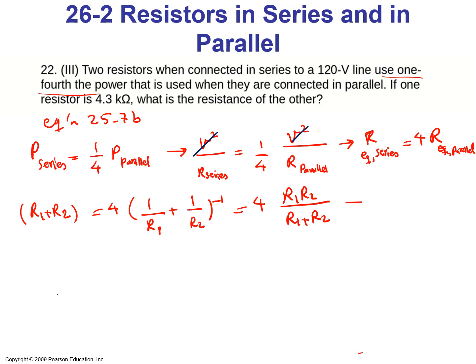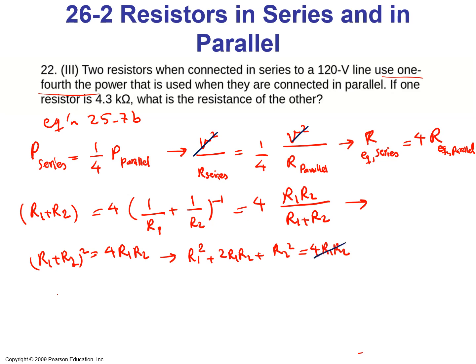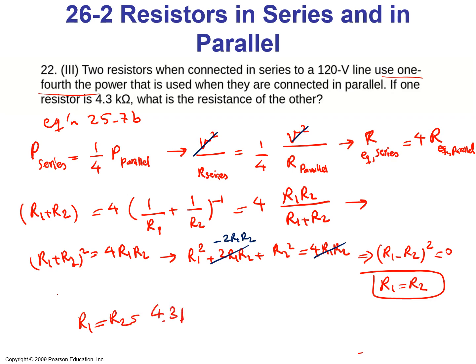Doing the algebra: R1 plus R2 squared equals 4 R1 R2. Expanding: R1 squared plus 2 R1 R2 plus R2 squared equals 4 R1 R2. Subtracting 4 R1 R2 from both sides gives R1 minus R2 squared equals zero, meaning R1 equals R2. Thus the two resistors must be the same. So if one resistor is 4.3 kilohms, the other is also 4.3 kilohms.